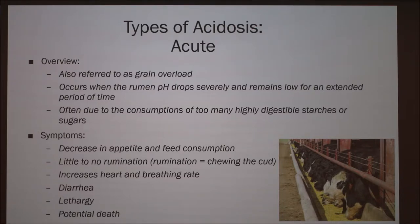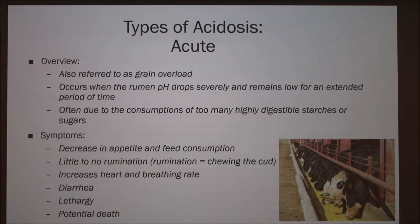There are two different types of acidosis. The first is acute acidosis, also referred to as grain overload. It occurs when the rumen pH drops severely and remains low for an extended period of time, often due to the consumption of too many highly digestible starches or sugars, such as in a high grain diet. Symptoms include decreased appetite and feed consumption, little to no rumination — the act of chewing the cud — increased heart rate and breathing rate, diarrhea, lethargy, and potential death.